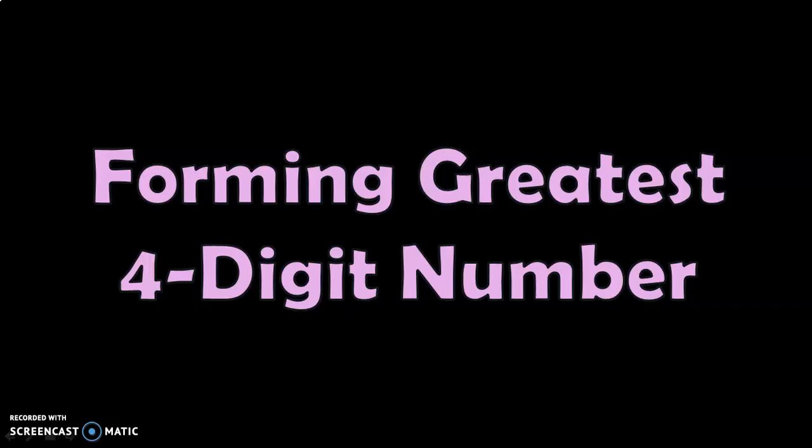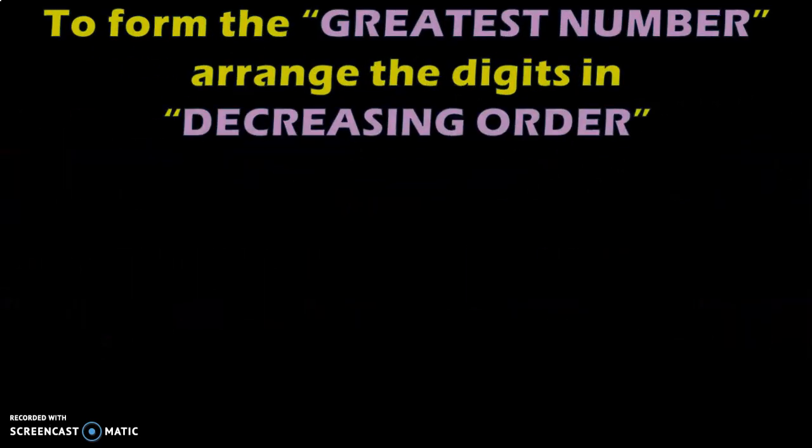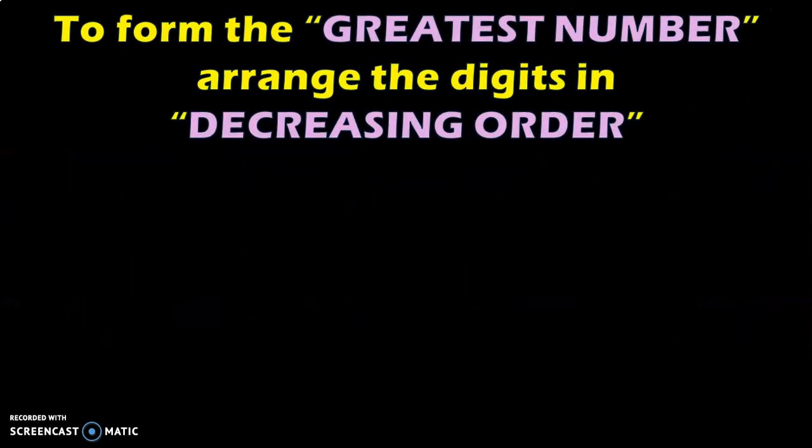Forming greatest four-digit number. In class 3, we will be dealing with four-digit numbers. The rule to form the greatest number from a given set of four digits is to arrange the digits in decreasing order or descending order, which means arranging the digits from big to small. Let us see this with an example.